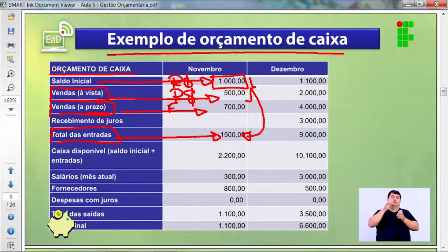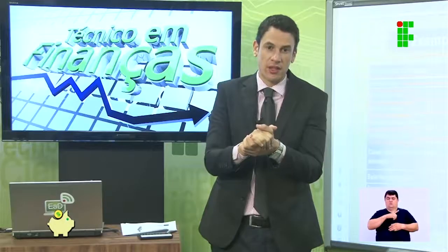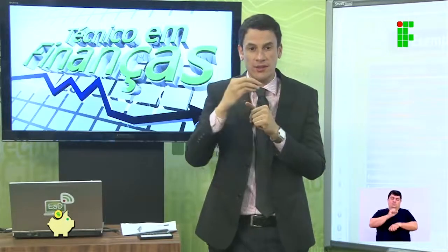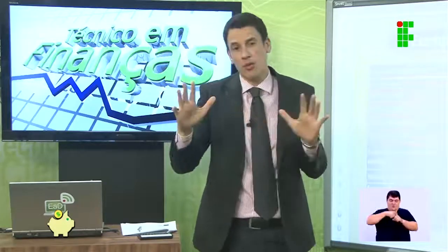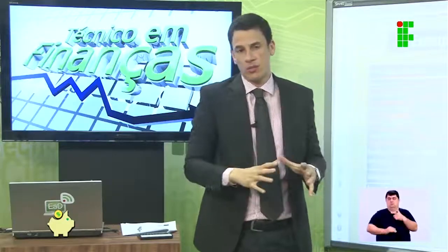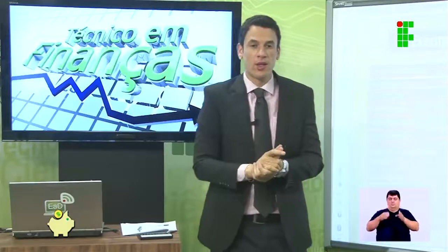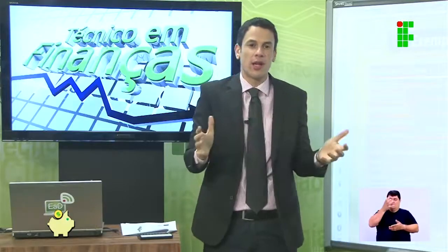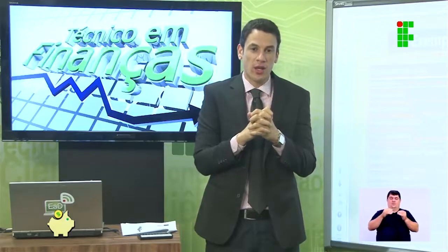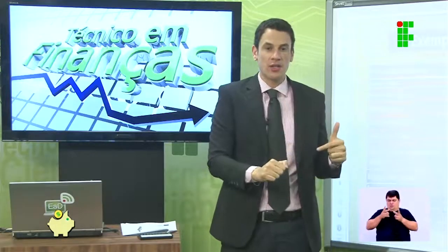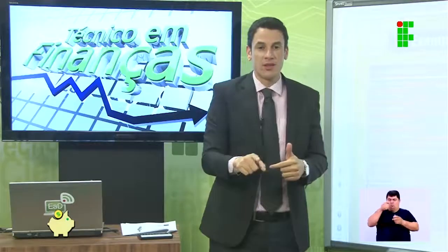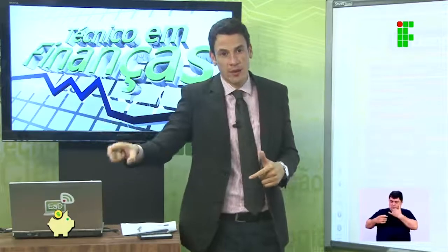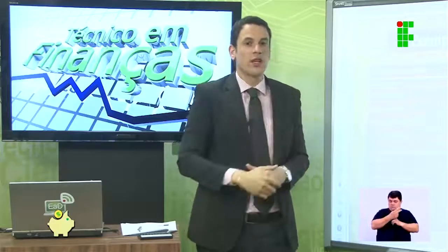Esses R$1.500 é o que você já tem no caixa da empresa. Os R$700 ainda vão ser recebidos — é uma previsão. Vai que o cliente não paga! Se eu vender para a Denise e ela não me pagar, e eu tiver dinheiro em caixa, honro minhas contas. Mas se eu não tiver esse controle, quando a Denise não pagar, tomo emprestado do banco e pago juros com o que seria minha margem.